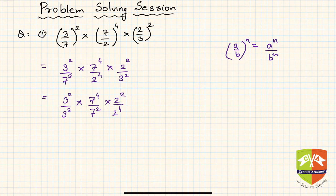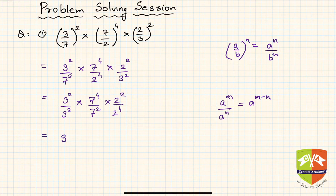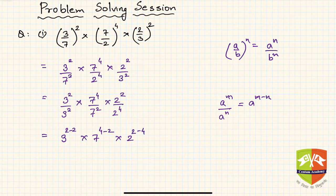The next law I'm going to use is: aᵐ / aⁿ = aᵐ⁻ⁿ. So this becomes 3^(2-2) × 7^(4-2) × 2^(2-4), which gives us 3⁰ × 7² × 2⁻².